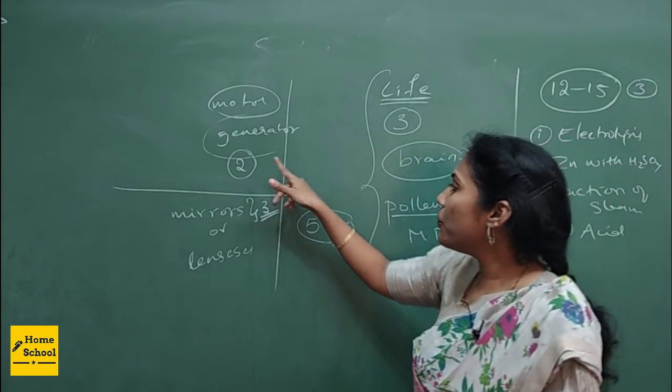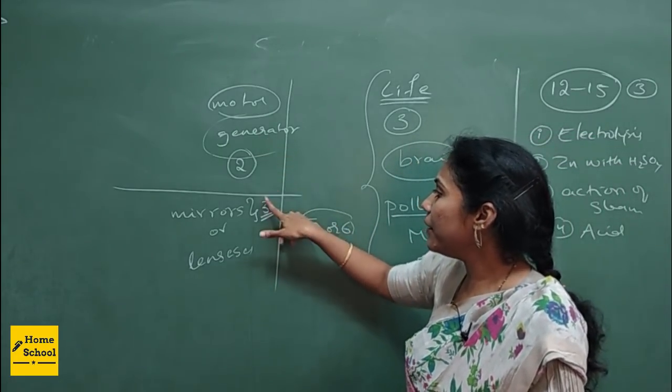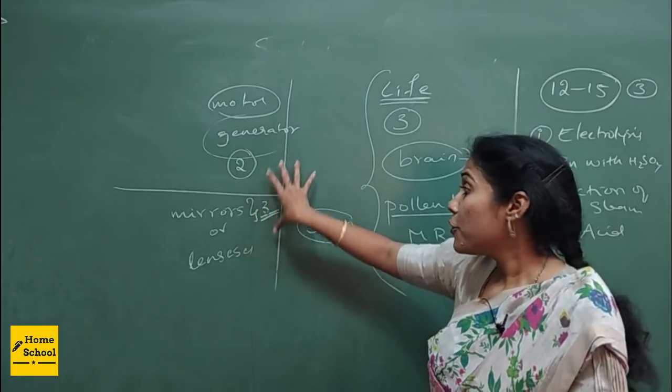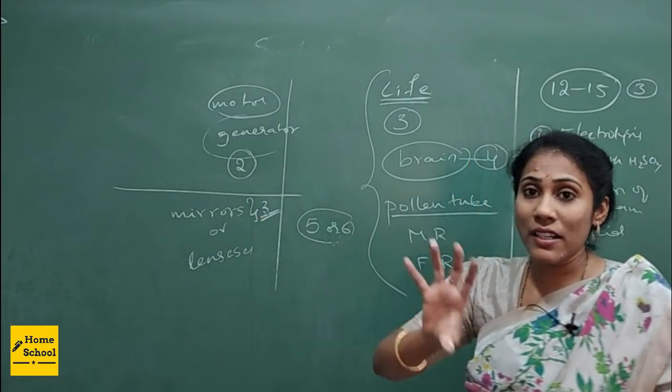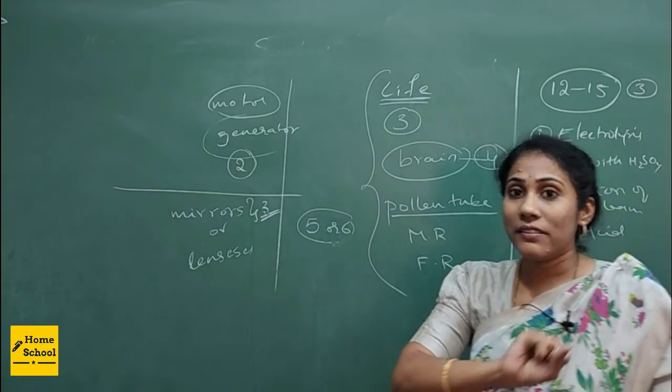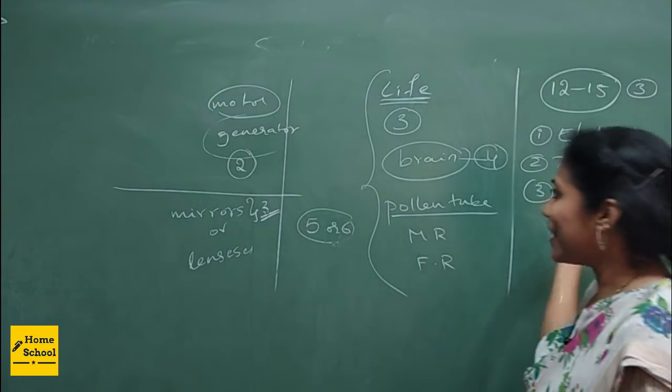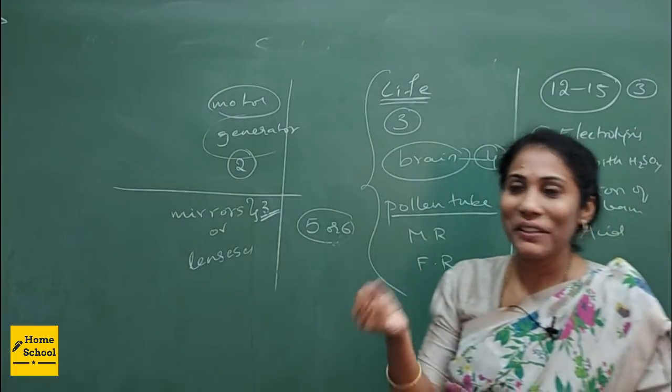So counting up the marks — 11, 12, 13, 14. That's already 14 marks in your hand if you can practice all of these diagrams.